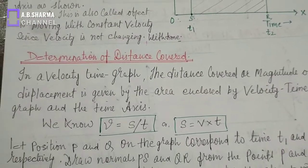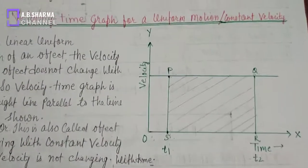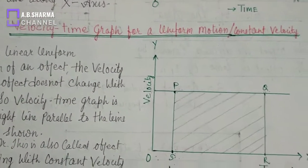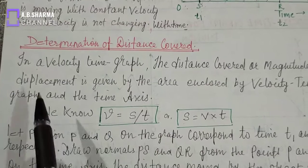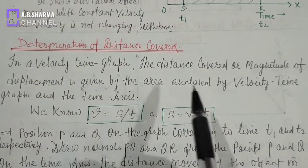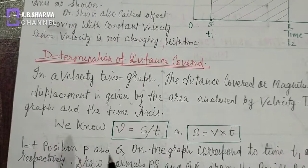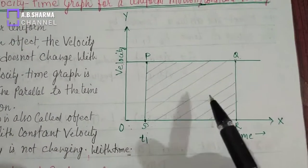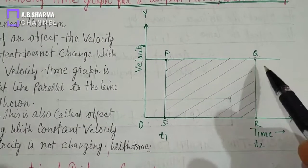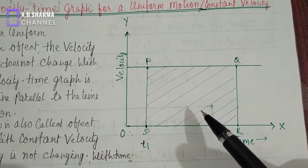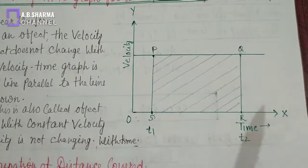Now the important thing is determination of distance covered — how we will calculate the distance covered by the object using the graph. In a velocity time graph, the distance covered or magnitude of displacement is given by the area enclosed by the velocity time graph and the time axis. The area under the velocity time graph gives the distance covered by the object.